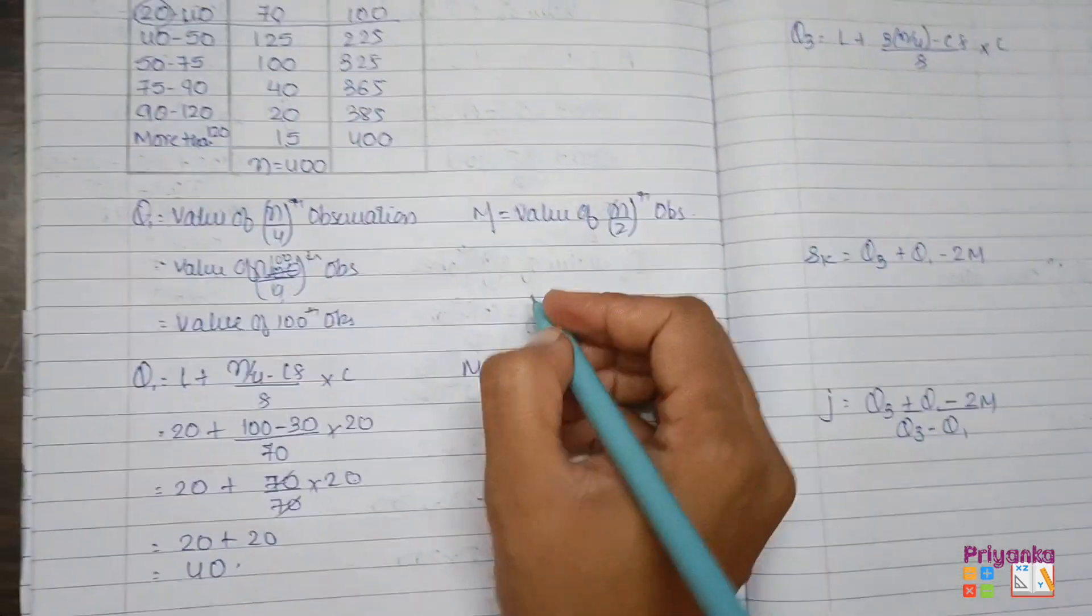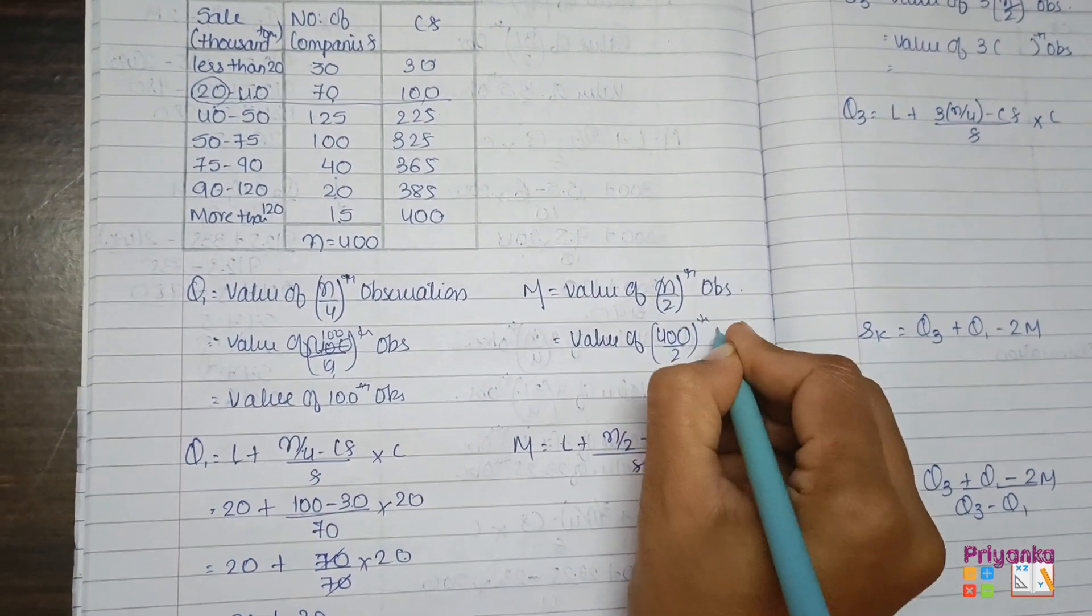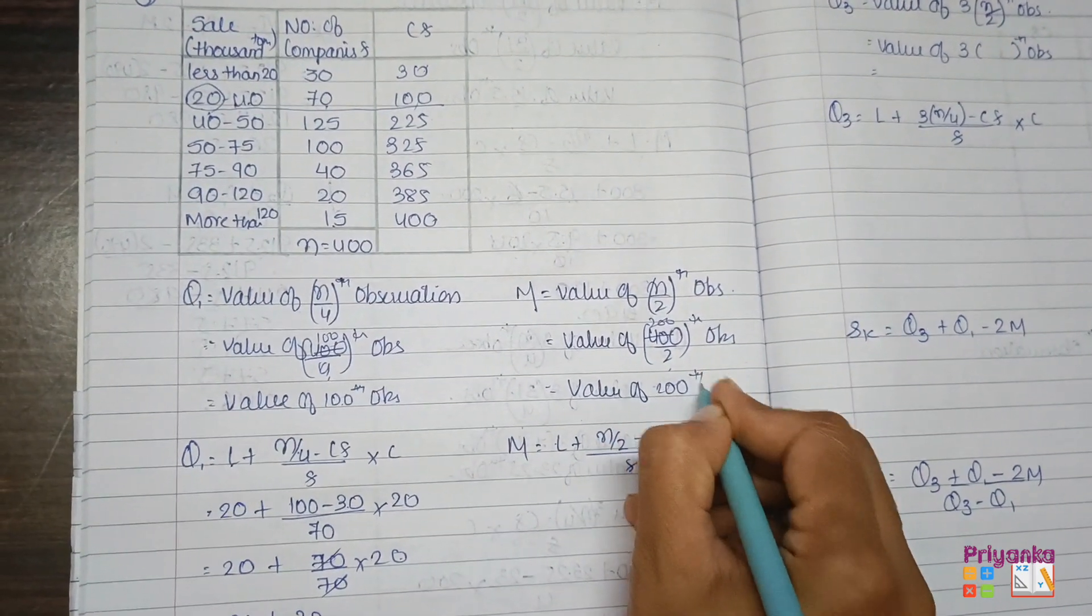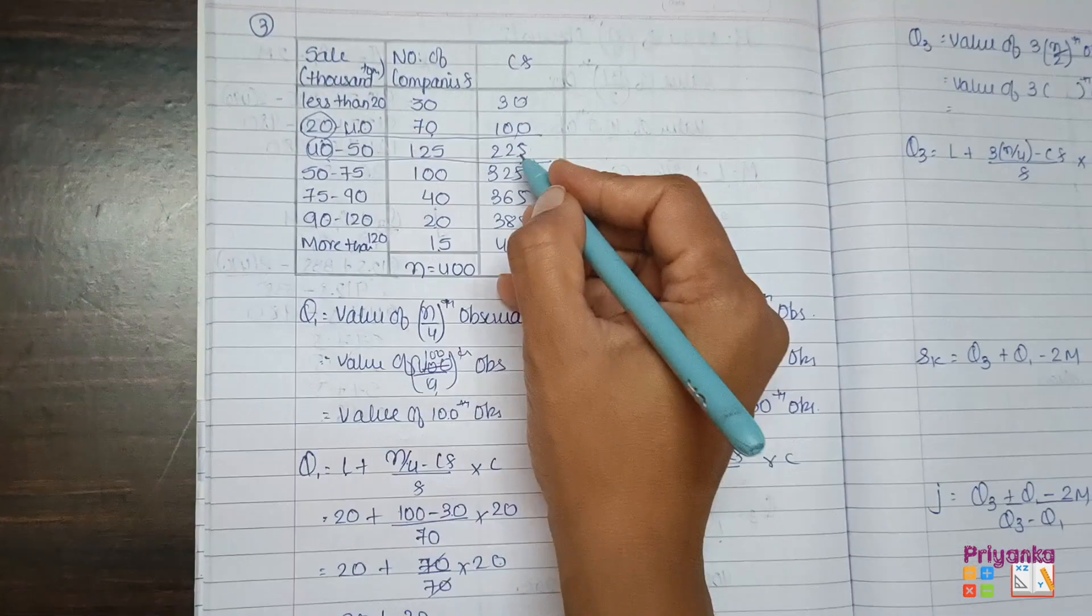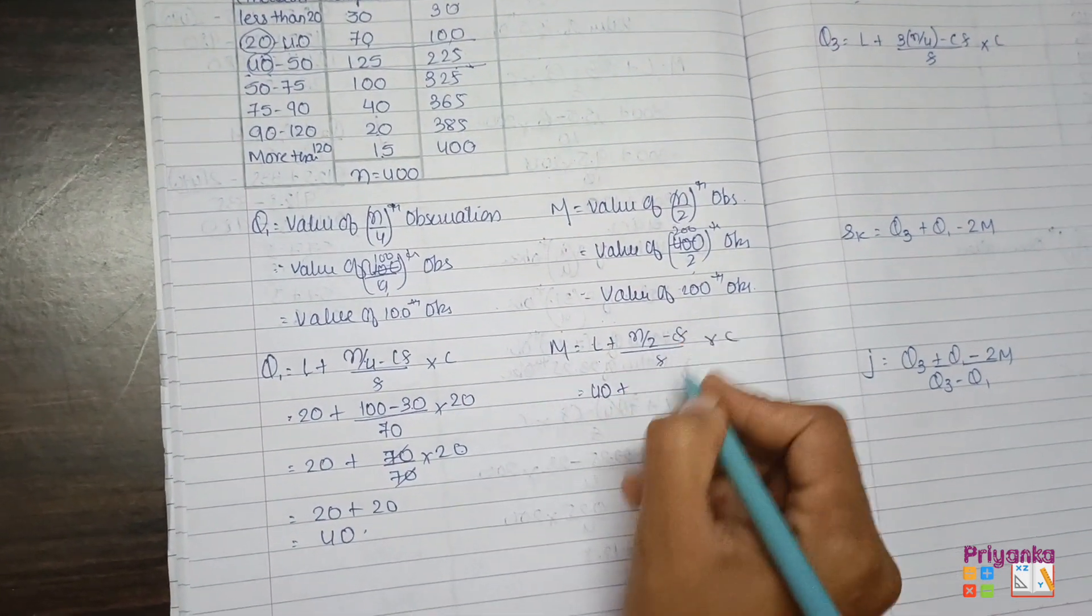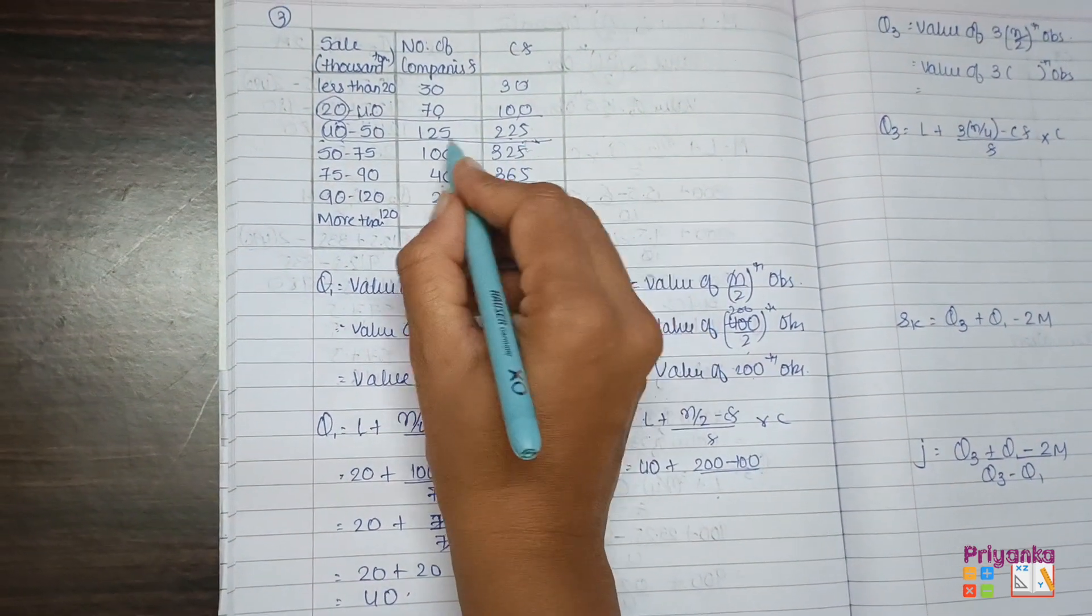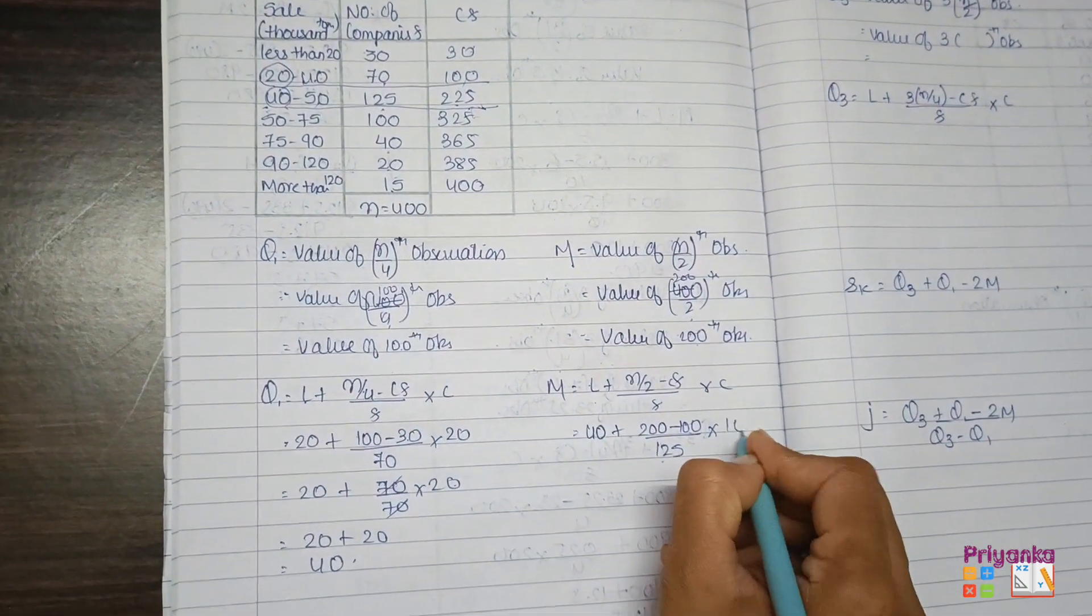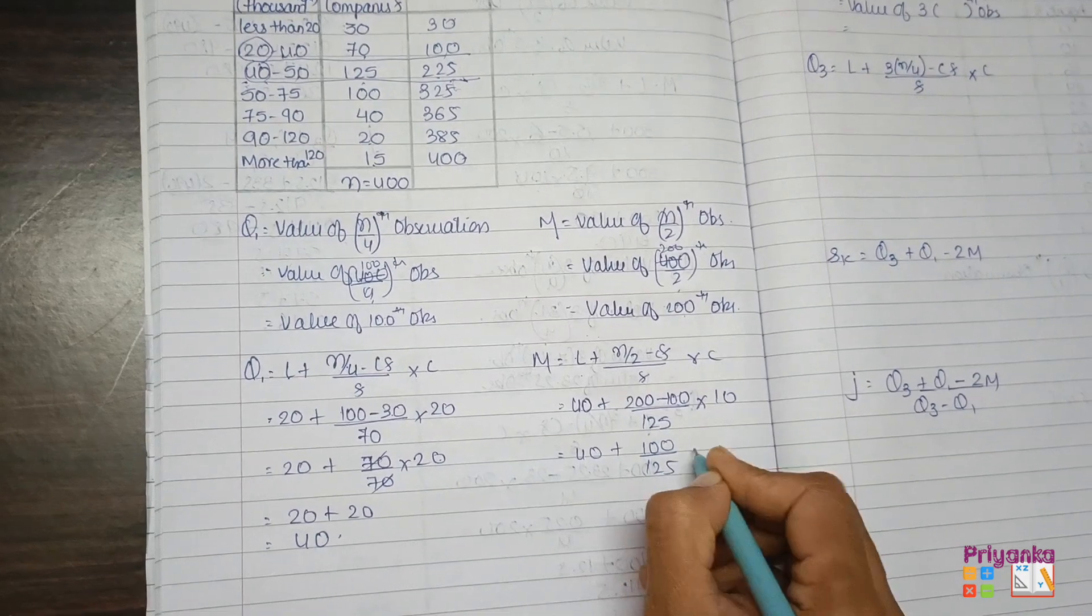Next, same way median find out karenge. So the value of N, which is 400 divided by 2, the observation which will be 200. So 200th observation. 200 I got in 225. So here the lower limit will be 40 plus N upon 2, I have 200 minus CF.